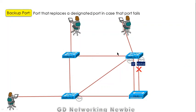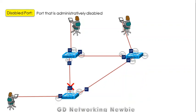The backup port is also a new port, and this port replaces the designated port in case that specific port fails. For example, if the designated port fails, the backup port takes over the functionality of the designated port. Then we have the disabled port, which is an administratively disabled port.